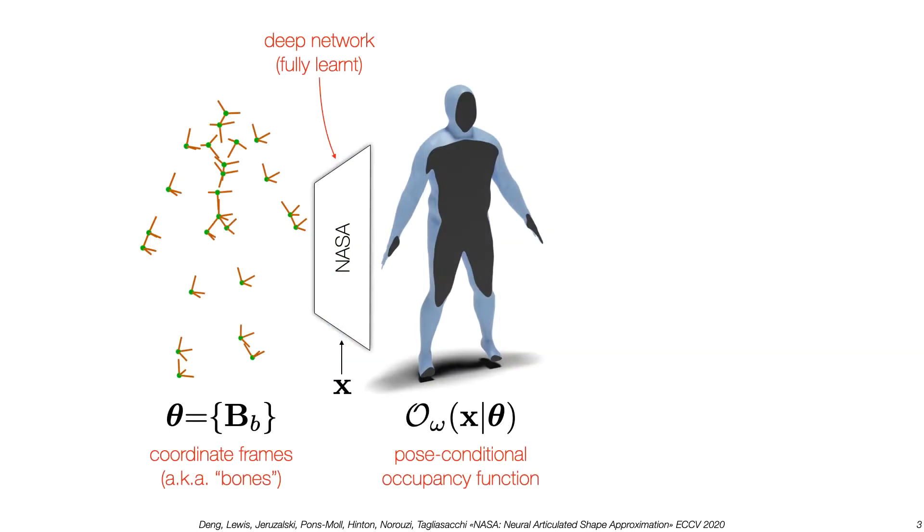We propose a model for digital representation of 3D humans that's learnable in a fully end-to-end fashion. As inputs, we expect a collection of coordinate frames, also called bones. Our model outputs a pose-conditional occupancy function which can be queried at a point x.